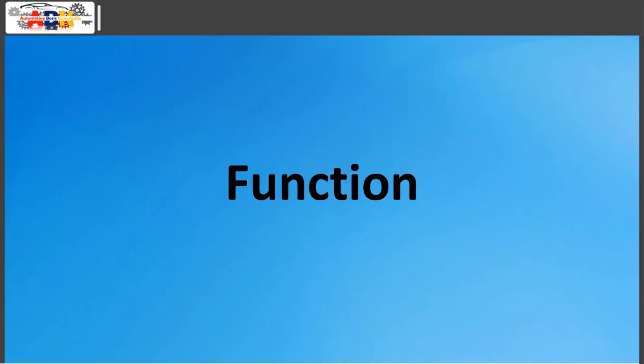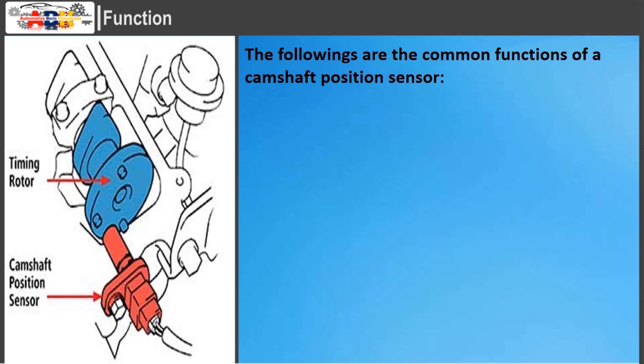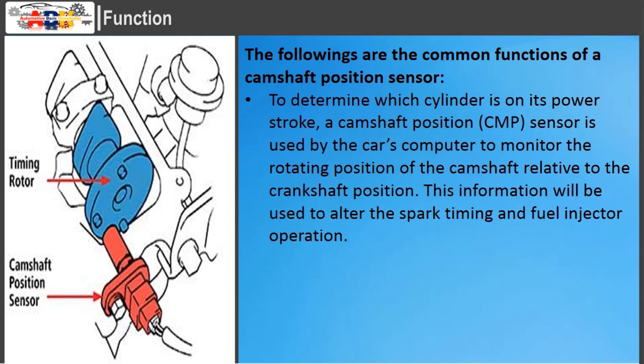The following are the common functions of a camshaft position sensor. To determine which cylinder is on its power stroke, a camshaft position sensor is used by the car's computer to monitor the rotating position of the camshaft relative to the crankshaft position. This information is used to alter the spark timing and fuel injector operation.